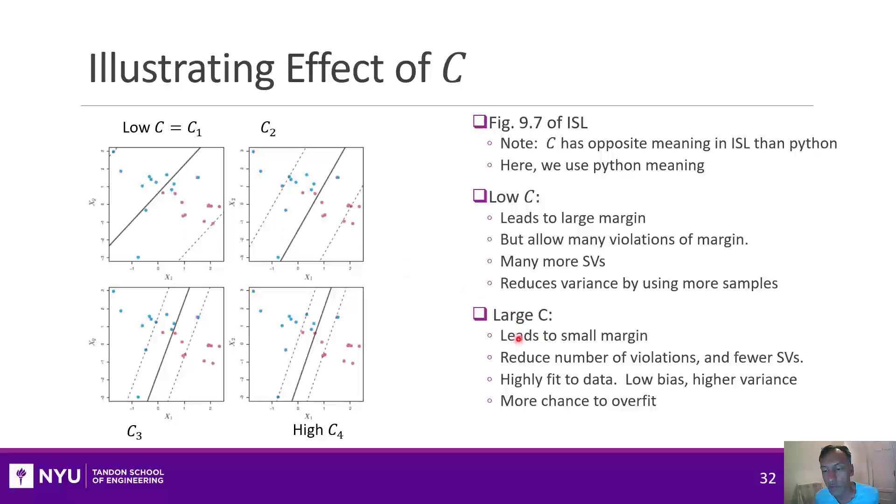On the other hand, if you pick a very large C, you're getting a very small margin, but you're using fewer and fewer support vectors, like shown here on the bottom right. So it becomes highly fit to the data. What this is doing is it's lowering the bias, but it's having a higher variance, so there's more chance to overfit. That's kind of conceptually how it works to pick these two off. And obviously, what we'll do then is pick it through cross-validation as we'll show later on.